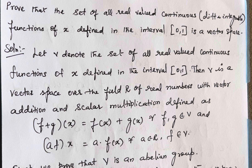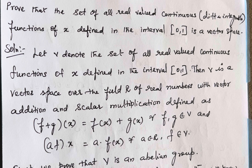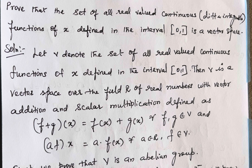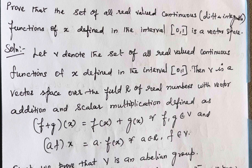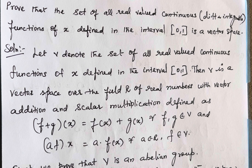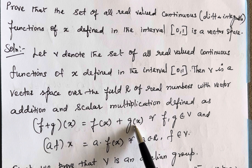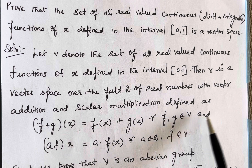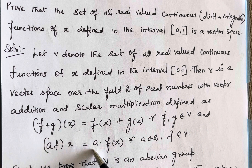Now we have to show that this is a vector space over the field F. Let us get into the solution. Let V denote the set of all real-valued continuous functions of x defined in the interval [0,1]. Then V is a vector space over the field R of real numbers with vector addition and scalar multiplication defined as: (f+g)(x) = f(x)+g(x) for all f, g in V, and a·f(x) = a·f(x) for all a in R, f in V.